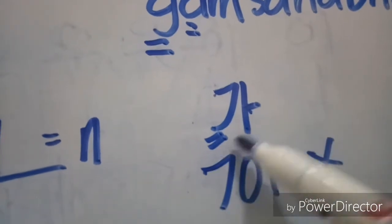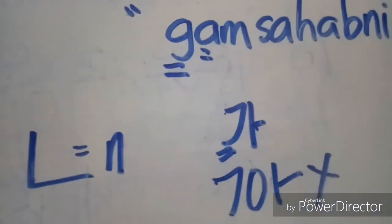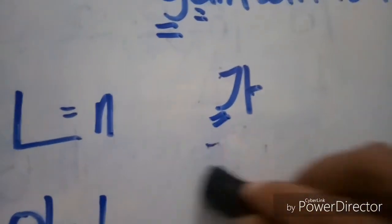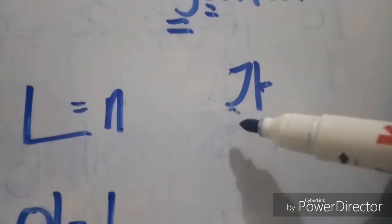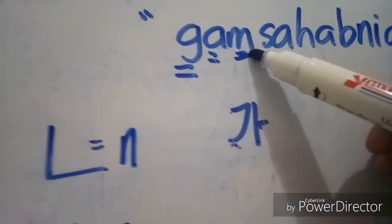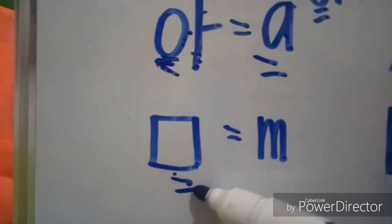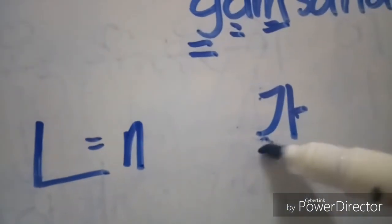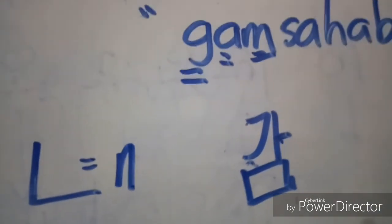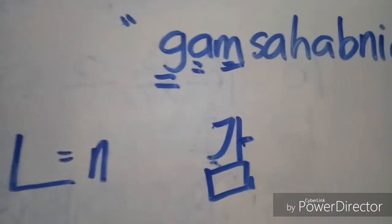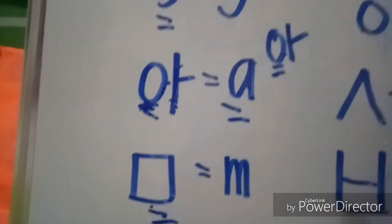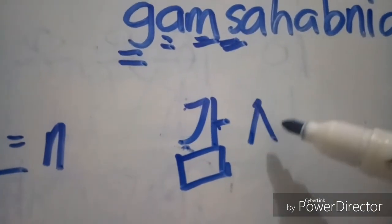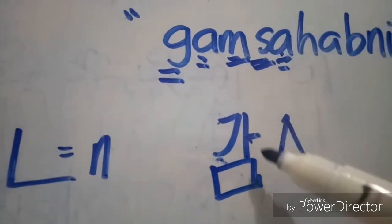You cannot write them like that — that is wrong — because we already have this consonant in front of this vowel so you can already read it. So we need to erase this one. Moving on, the next one is letter M. We have to write it down here — it is a final consonant. That is the first syllable. And next, letter S.